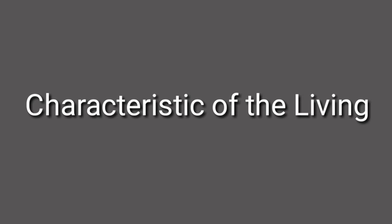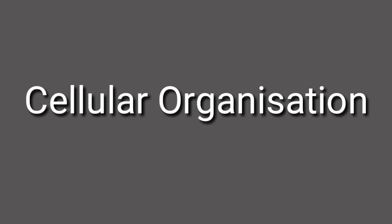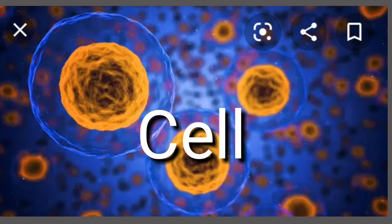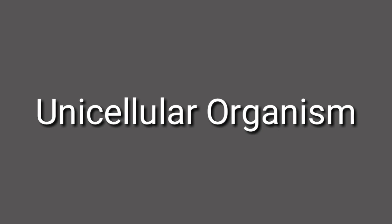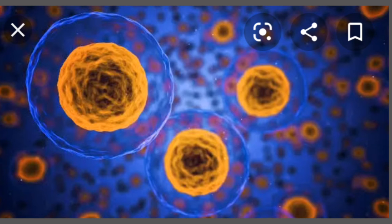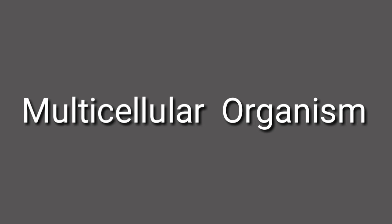Now let's see the differences between living and non-living things. In simple words, all living organisms have life, and that distinguishes living matter from non-living. The first characteristic of living things is cellular organization — all living things are made up of cells. A cell is the basic unit of life. Some living things consist of only a single cell, for example amoeba, yeast, and bacteria — such organisms are called unicellular organisms.